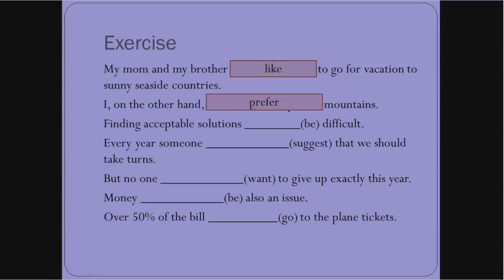I, on the other hand, prefer mountains. Prefer - the verb agrees with the subject, which is I in this case. No matter what is between the subject and the verb, the verb needs to agree with the subject I.